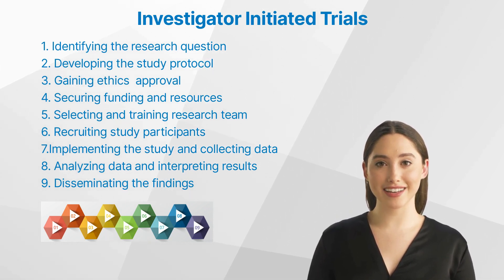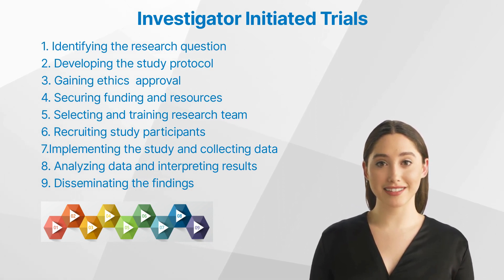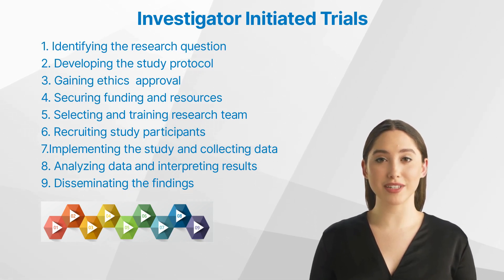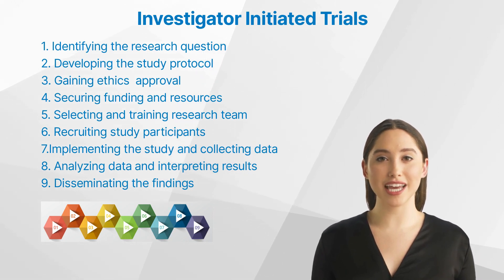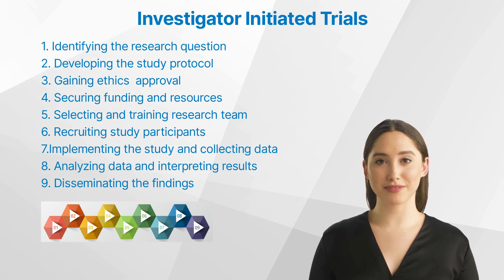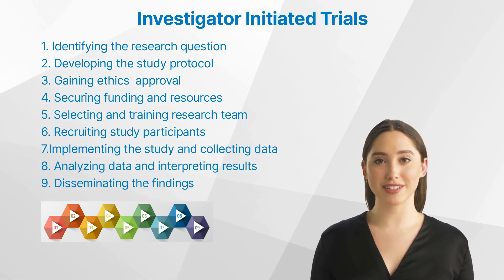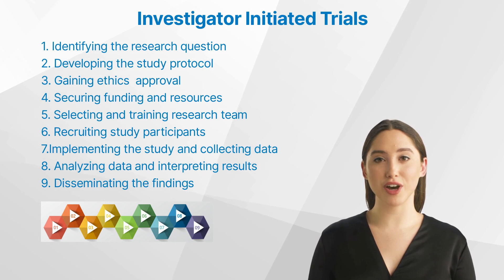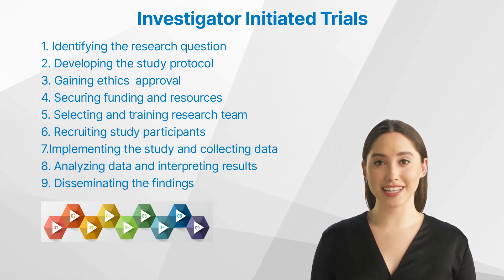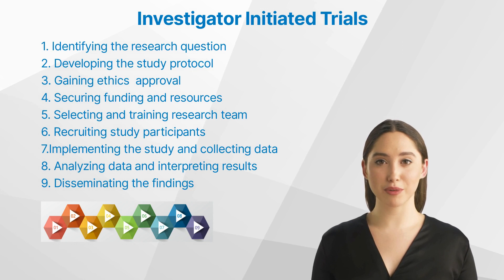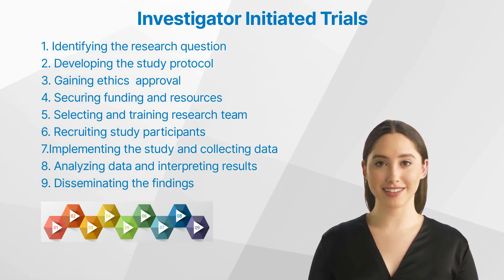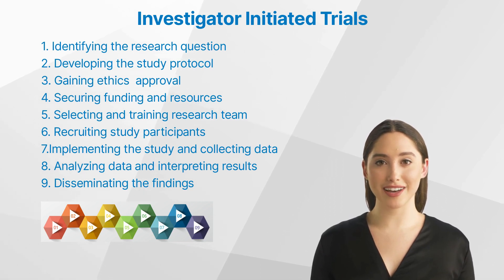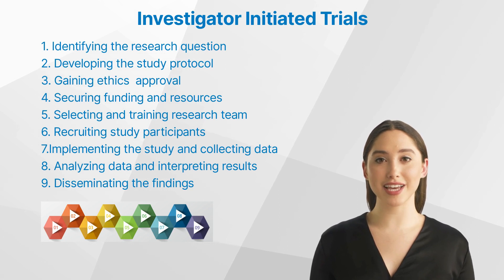Step 3: Gaining Ethics Committee or Institutional Review Board approval. Before initiating the study, the investigator must obtain approval from the appropriate ethics committee or institutional review board to ensure the ethical conduct of the trial. Step 4: Securing funding and resources. Investigator-initiated trials often face funding challenges, so investigators must secure financial support from grants, foundations, or other sources. In addition to funding, investigators also need to ensure they have access to necessary equipment, facilities, and personnel.